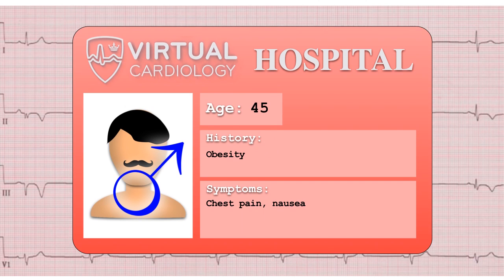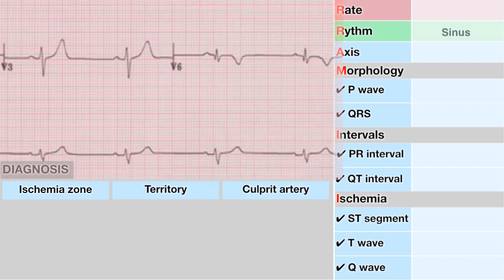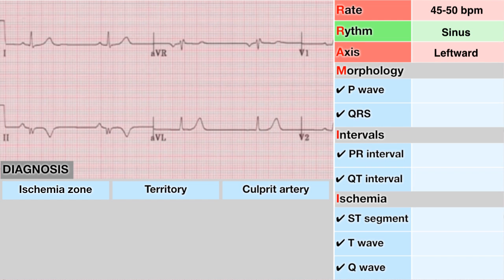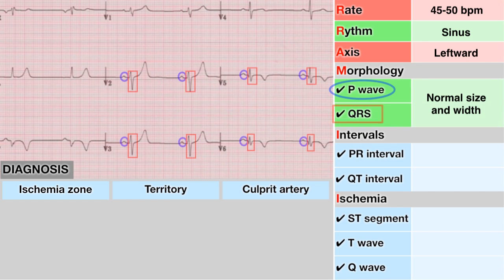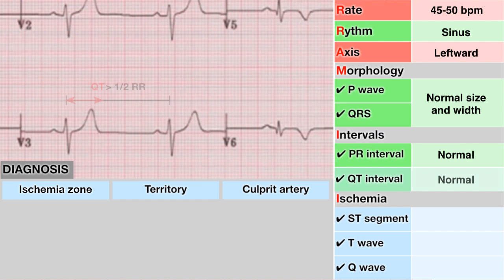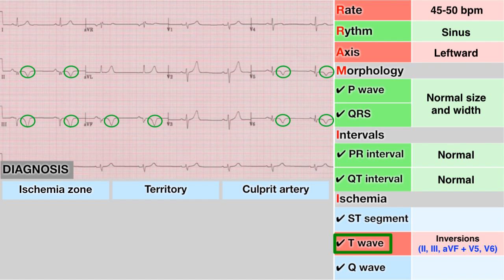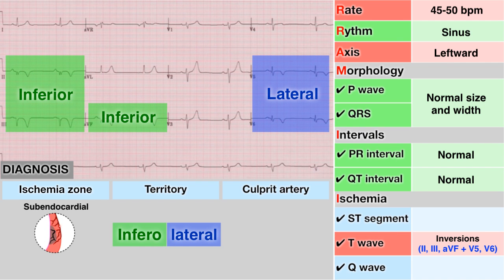Here is an EKG of a 45-year-old obese male presenting with chest pain and nausea. There is clear sinus bradycardia at a rate of about 45–50 beats per minute. The axis is leftward as it is positive in lead 1 and negative in lead 2. The P wave and QRS complex are of normal amplitude and width. The PR and QT seem normal. There is marked T wave inversions in the inferior leads 2, 3, and AVF as well as the lateral leads V5 and V6, consistent with infralateral ischemia.